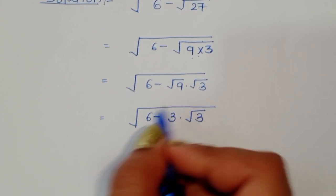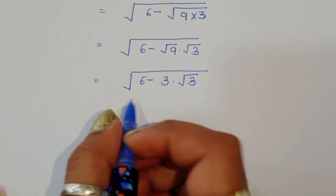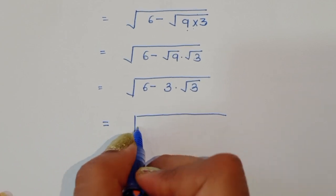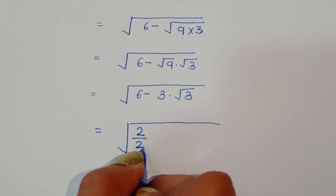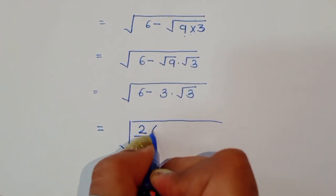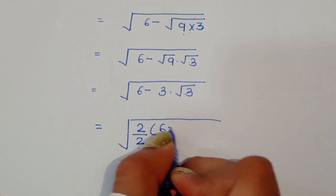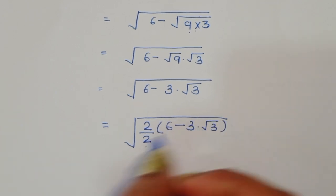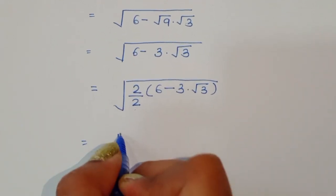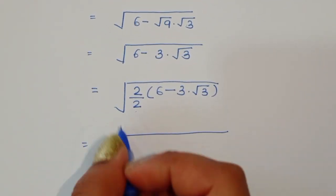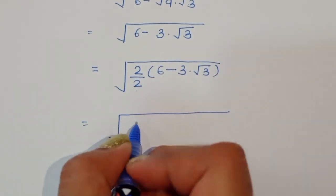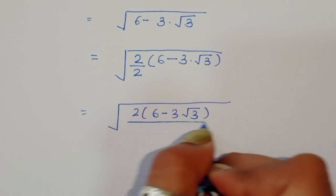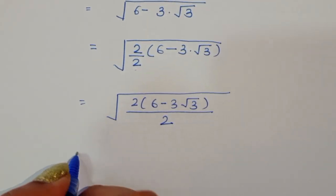Now we multiply and divide by 2 with this term. So we have 6 minus 3 square root of 3, and multiplying and dividing by 2 gives us 2 times (6 minus 3 square root of 3) divided by 2.